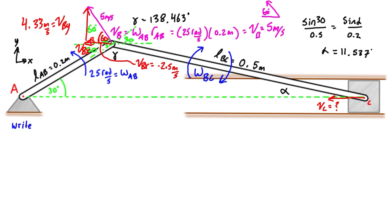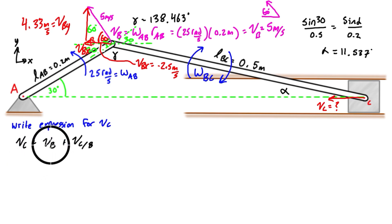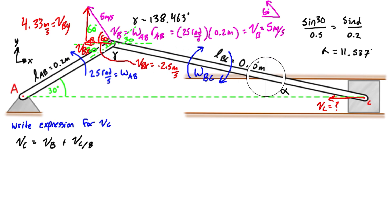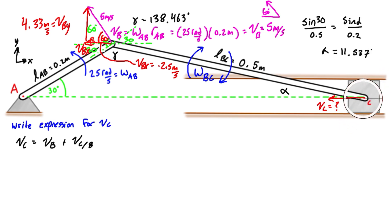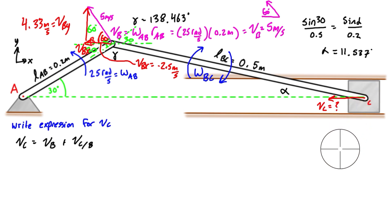Knowing the absolute velocity of B is 5 m/s, we write the expression: velocity of C equals velocity of B plus velocity of C with respect to B. The absolute velocity of C equals the absolute velocity of B plus the relative velocity of C from the perspective of point B. Since member BC doesn't change in length, the relative velocity of C with respect to B must be perpendicular to the axis of the member — C moves in a circular path about B at this instant.